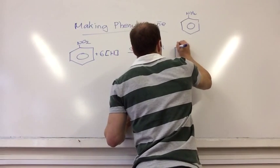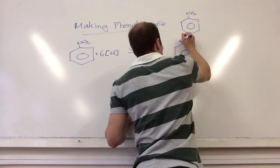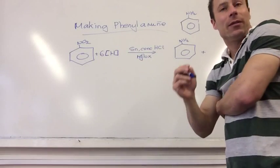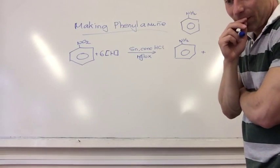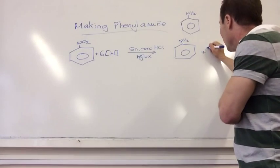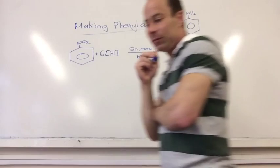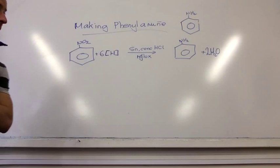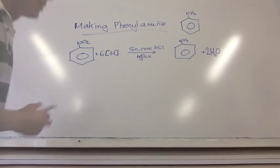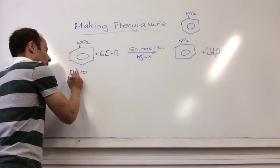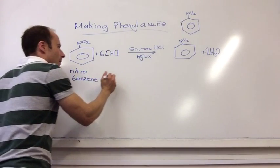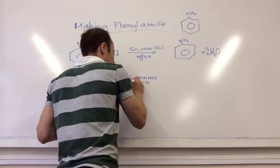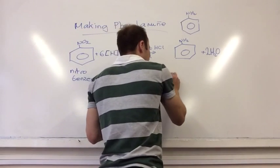That makes phenolamine. Wait, is it NO2? Where's it? NO2, yeah. What's that then? Tin. Tin and two H2O. So this is nitrobenzene. Then you just put tin in concentrated HCl reflux to make phenolamine and water.